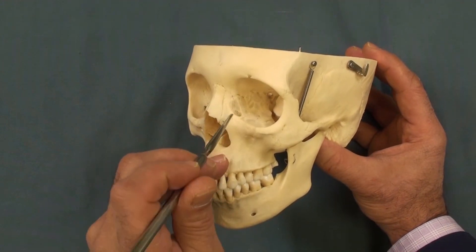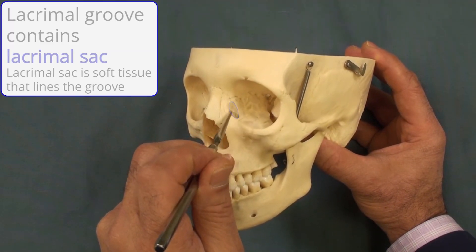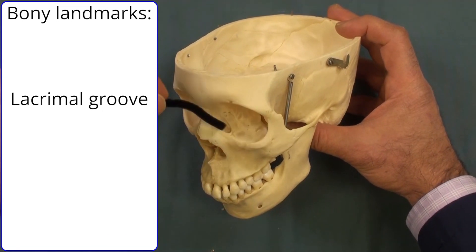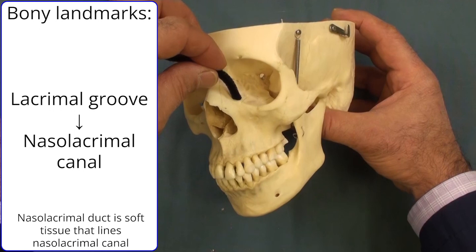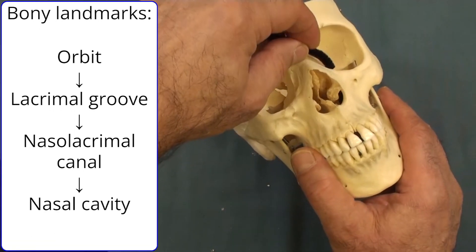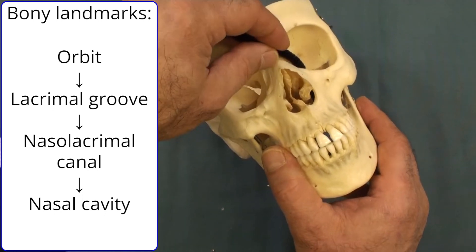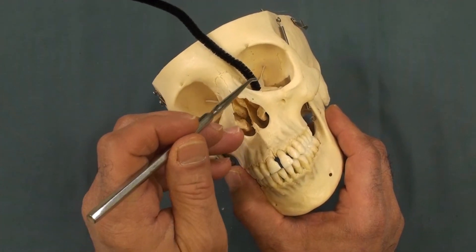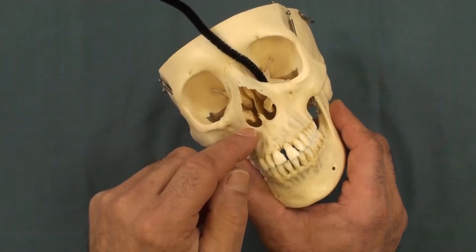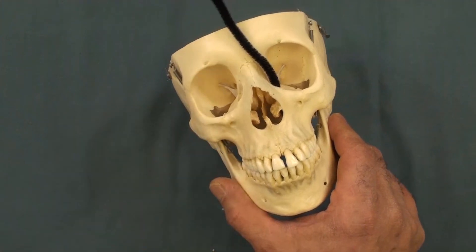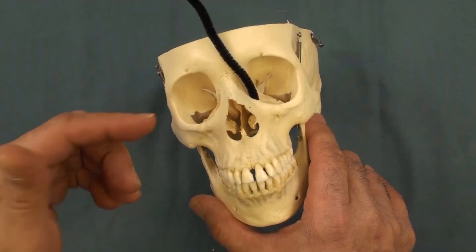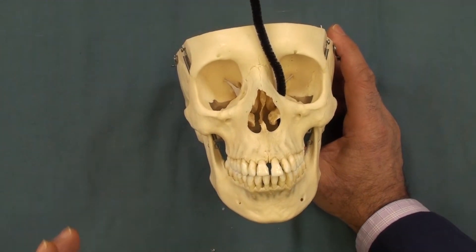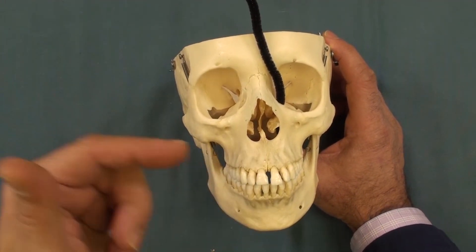Moving anteriorly on the medial wall, we find the lacrimal groove, which contains the lacrimal sac. This lacrimal groove is connected to the nasolacrimal duct, which connects the orbit to the nasal cavity. You can see the pipe cleaner emerging inside the nasal cavity. When we have an extra amount of tears, it passes through this duct and drains into the nasal cavity — which is why we sniff when we cry.